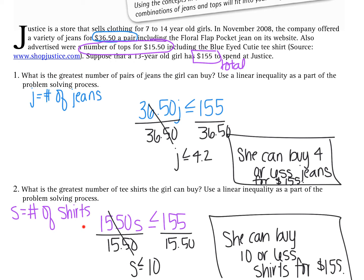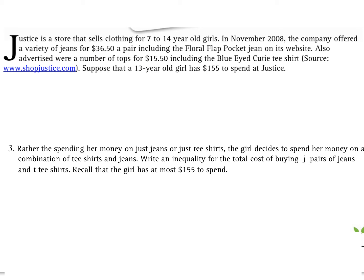For question two, the same process applies with shirts at $15.50 each: 15.50S ≤ 155, giving S ≤ 10. She can buy ten or fewer shirts. For question three, combining both: rather than spending on just jeans or just shirts, write an inequality for the total cost — 36.50J + 15.50S ≤ 155 — since what she spends on both combined must be at most $155.